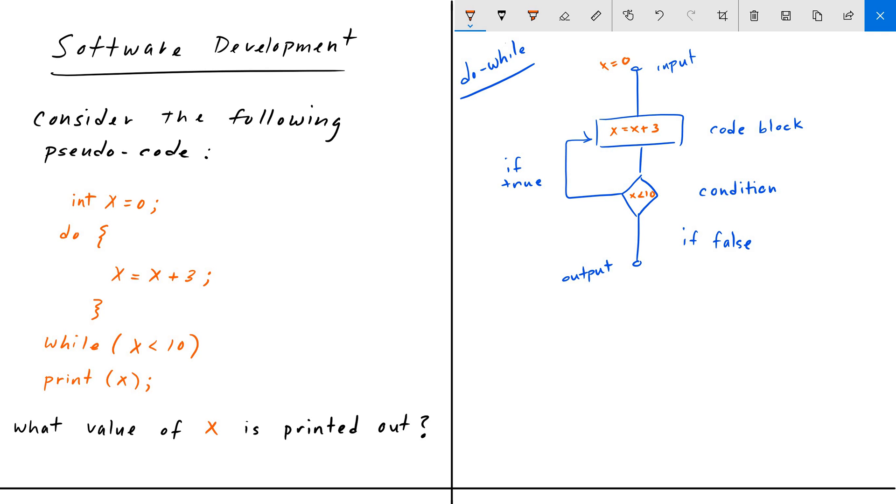So here we're going to do a little table: iteration and value of X.